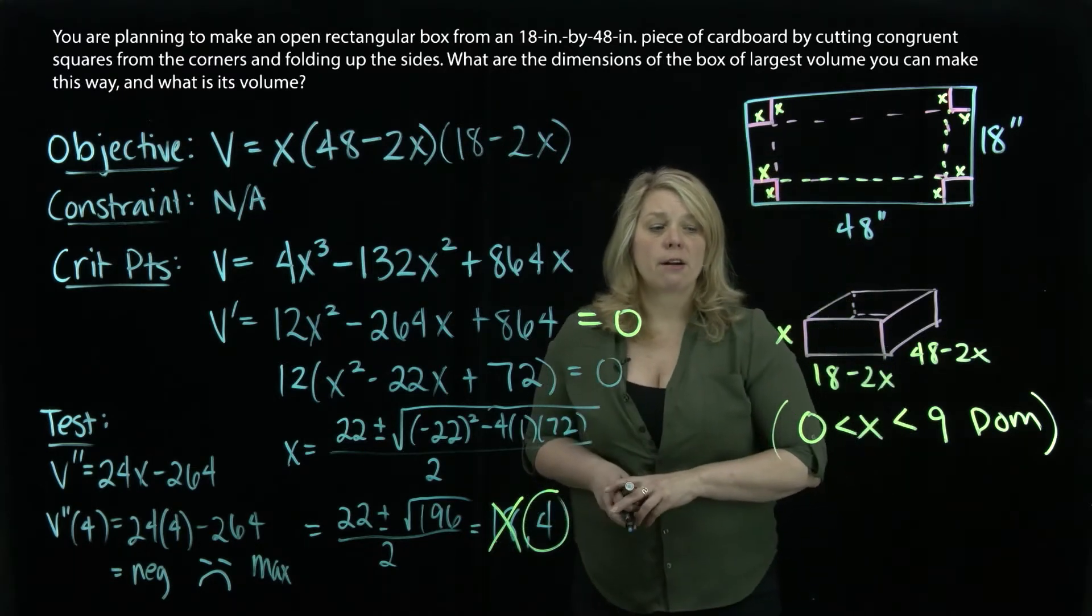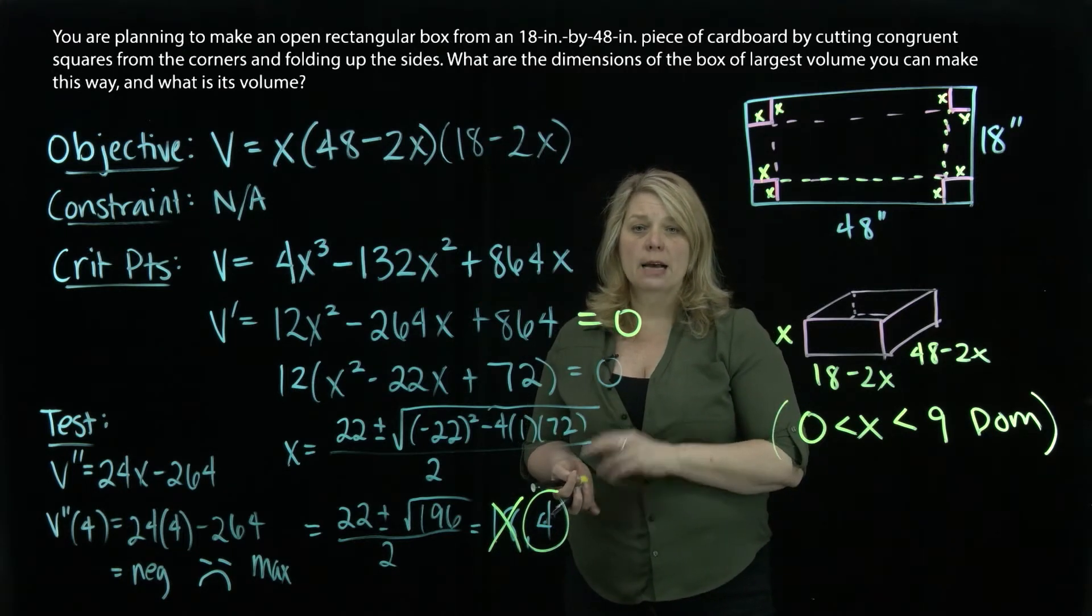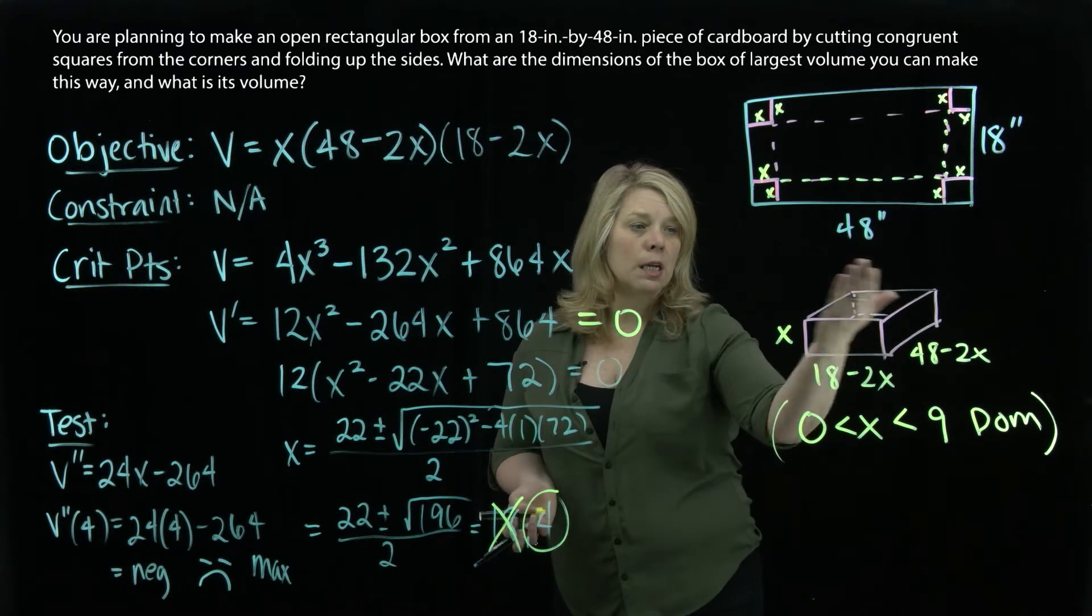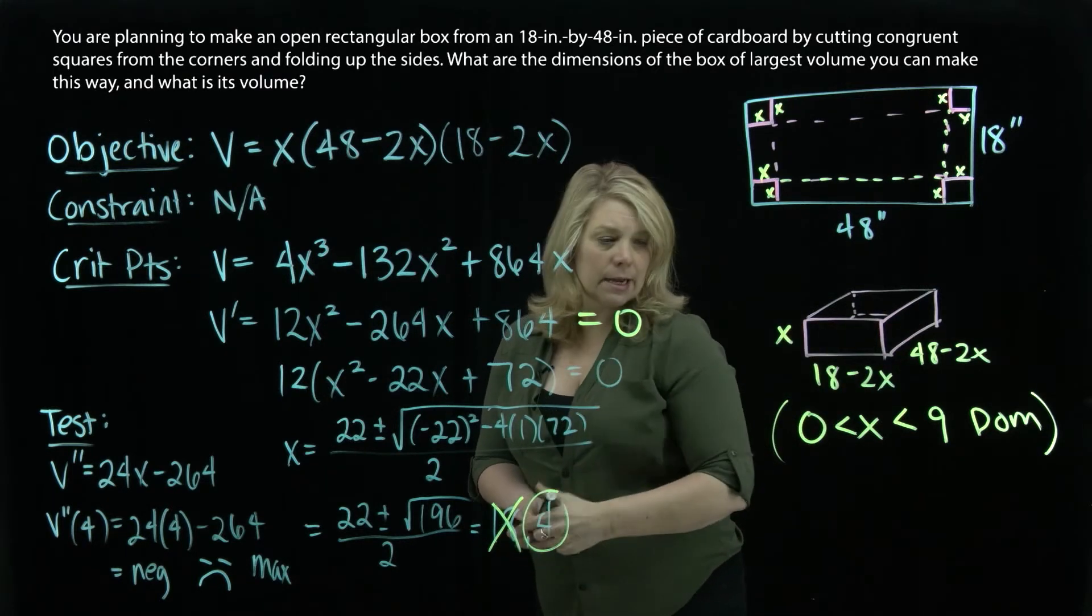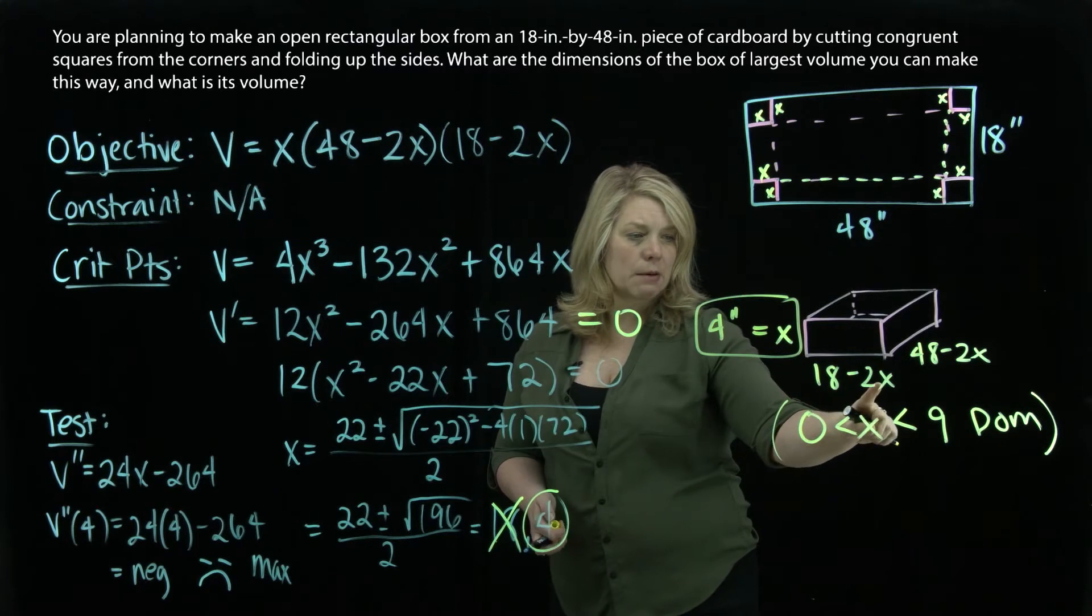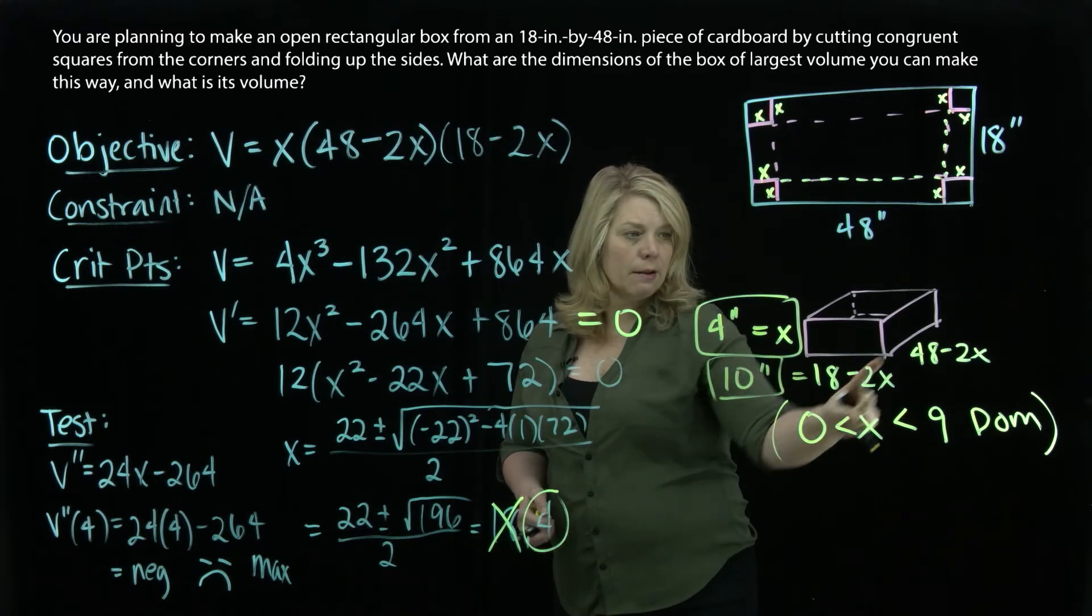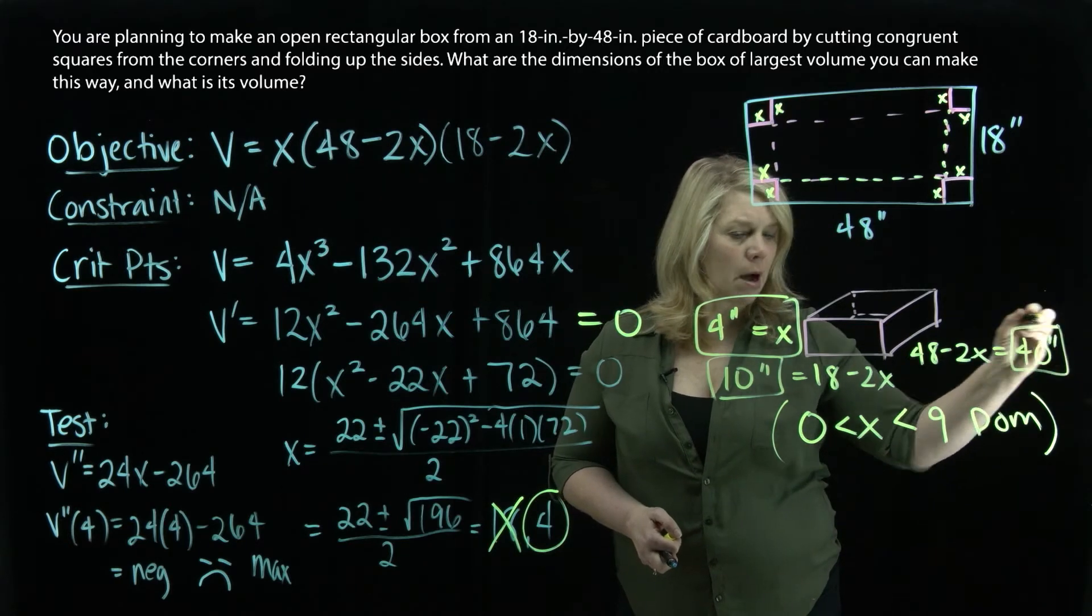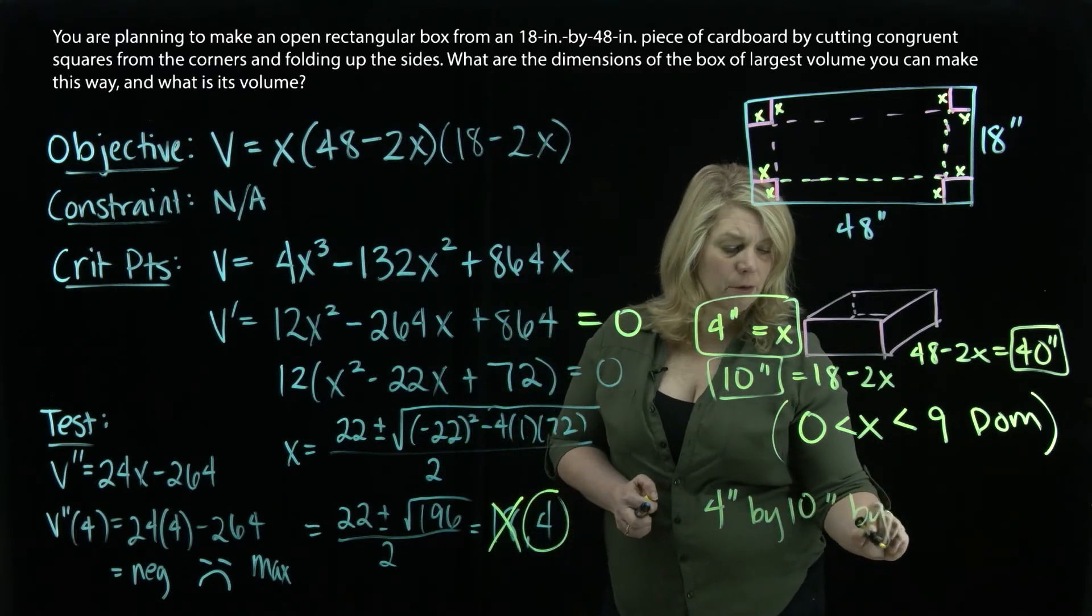And then from there, it's just a matter of making sure we answer the question. We're going to go back to the word problem and make sure we answer what was asked. It asks us several things here, actually. What are the dimensions of the box of largest volume? So my diagram here can help with that. It's asking us for the length, width, and height of the box. So x equals 4 inches is going to be our height. And then 18 minus 2 times 4, that will be 10 inches for the width. And then 48 minus 2 times 4, that will be 40 inches for the length of the box. So the box will be 4 inches by 10 inches by 40 inches.